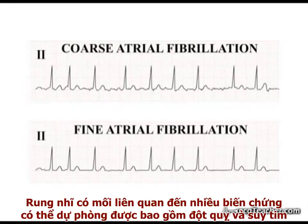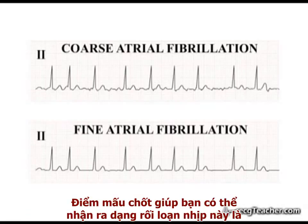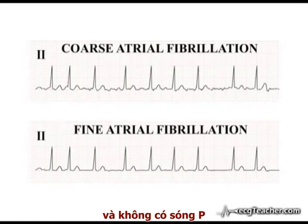Atrial fibrillation is associated with a number of preventable complications, including stroke and heart failure. You must be able to identify it on the ECG. The key to identifying this arrhythmia is the irregularity of ventricular depolarization and the absence of P-waves.